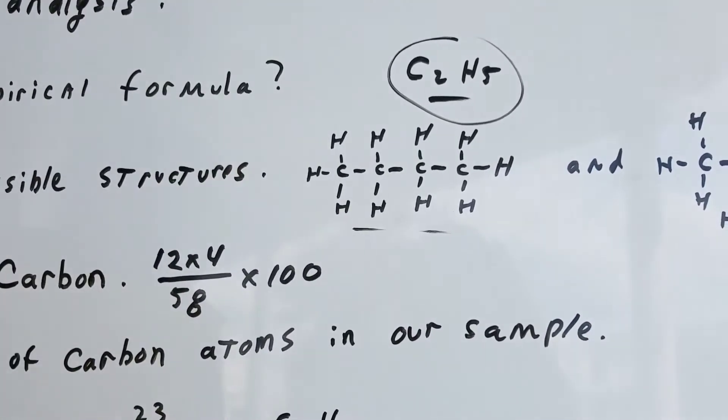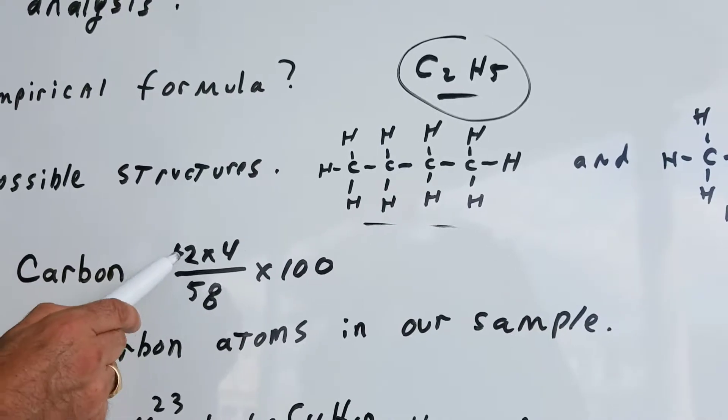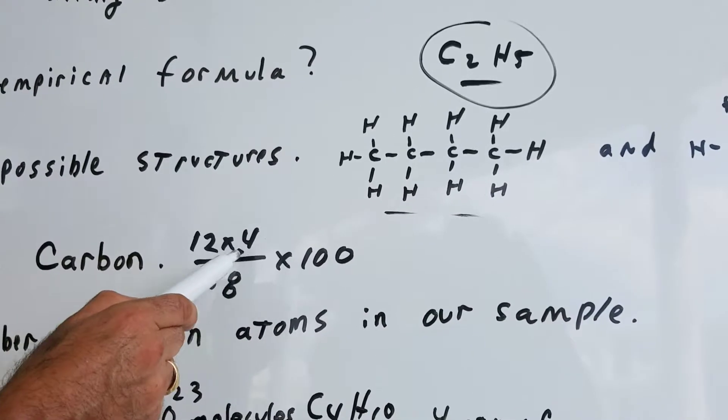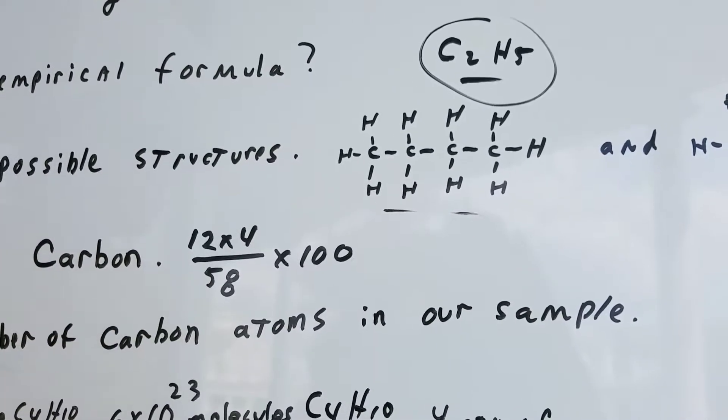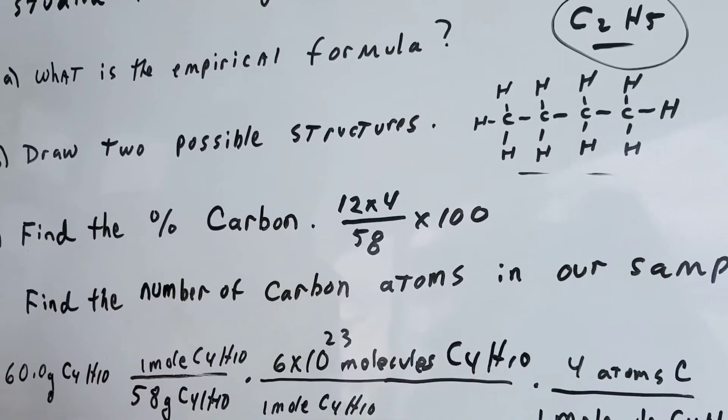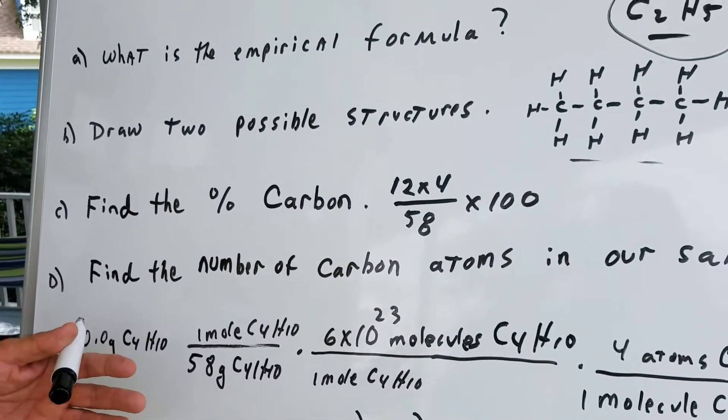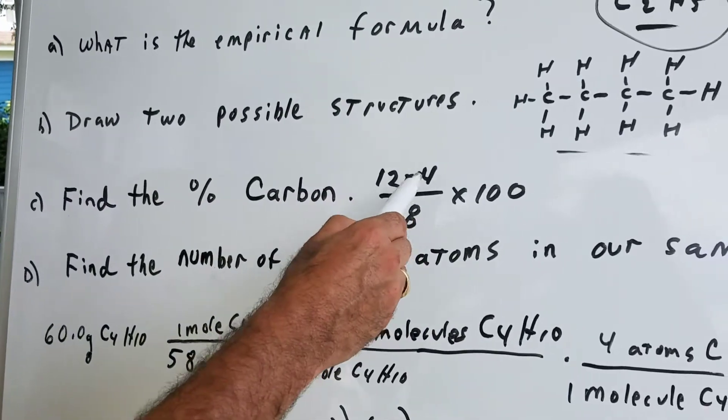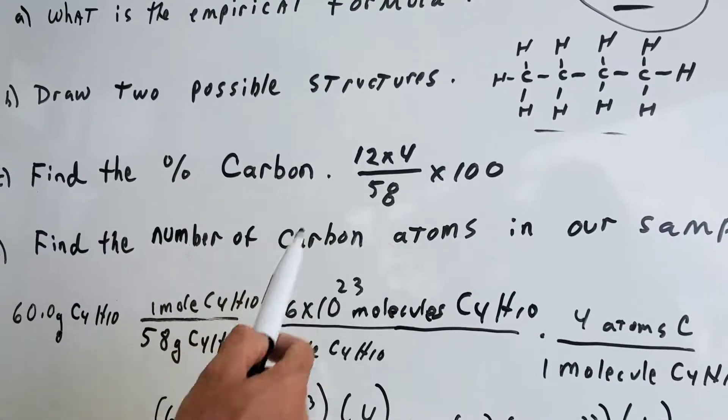So the total weight is 58. Now, there are four carbons, and each carbon weighs 12. So 12 times 4 over 58 times 100 would give you the percent composition. Remember, percent composition is nothing more than the part over the whole. So 12 times 4 over 58 times 100.